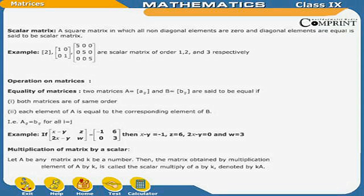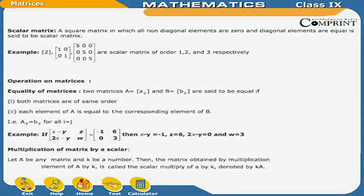Scalar matrix: A square matrix in which all non-diagonal elements are 0 and diagonal elements are equal is said to be a scalar matrix. Examples include square matrices of order 1, 2, and 3 respectively.